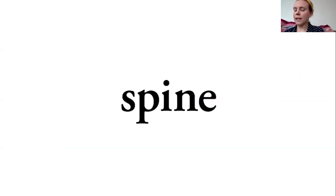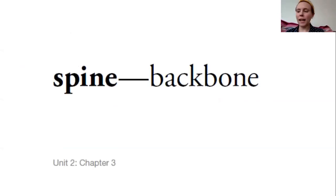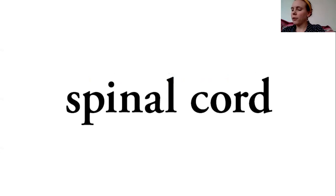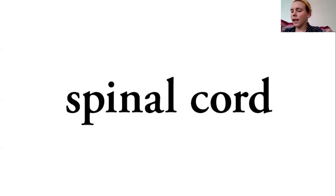The next word we are looking at is spine. Spine has a silent E on the end; it has only one vowel sound, that long I. You may have heard this word before. A spine is a more scientific term for your backbone. So I'm going to draw that same picture like I did for backbone. The next word is spinal cord. Notice spinal sounds a little bit like spine — it has that A-L suffix on the end, showing us it's describing the kind of cord that it is: a spinal cord.